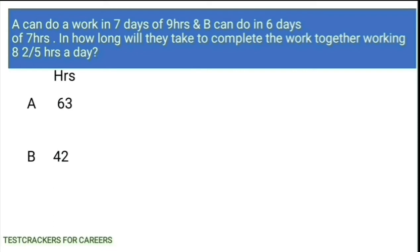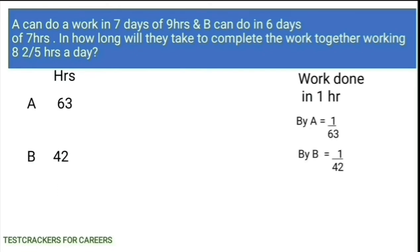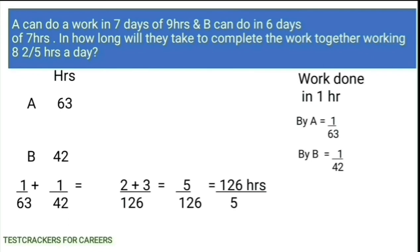In 1 hour, the work done by A is 1 by 63 and by B is 1 by 42. So the work done in 1 hour by A and B is 1 by 63 plus 1 by 42, which is 5 by 126. Inversing it, we can find the time taken by A and B to complete the work, that is 126 by 5 hours.